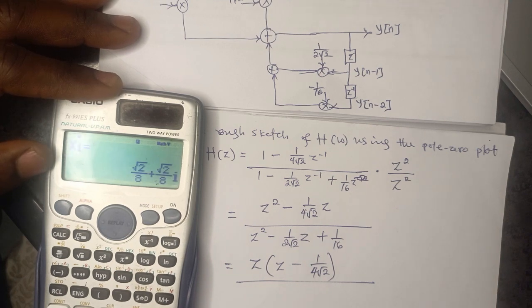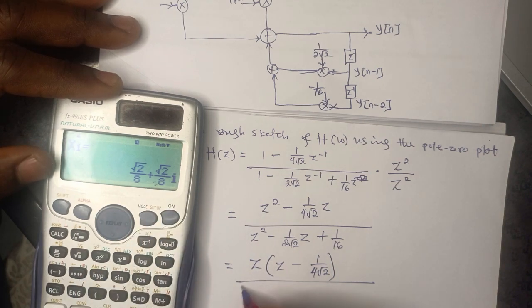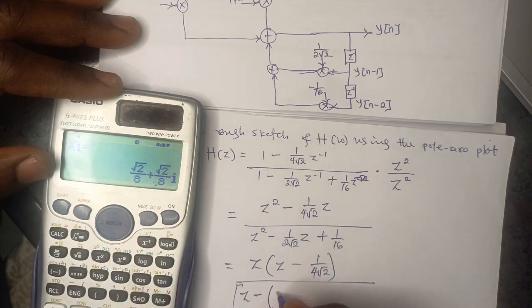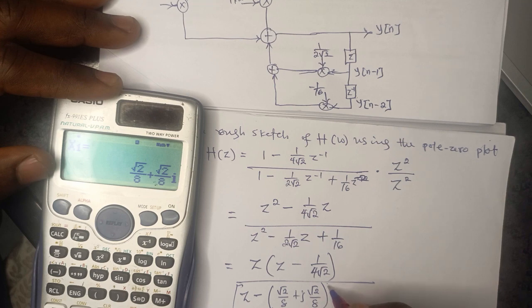When we enter everything, we get a complex number as the answer. So the first root is Z = √2/8 + j√2/8.